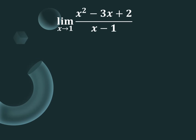First limit from our review. Step 1: we take x equals 1 and substitute into the given function. We get 1 squared minus 3 times 1 plus 2, over 1 minus 1. Evaluating: 1 minus 3 is negative 2, plus 2 is 0, over 0. We have 0 over 0, which is undefined, so we cannot evaluate it directly.